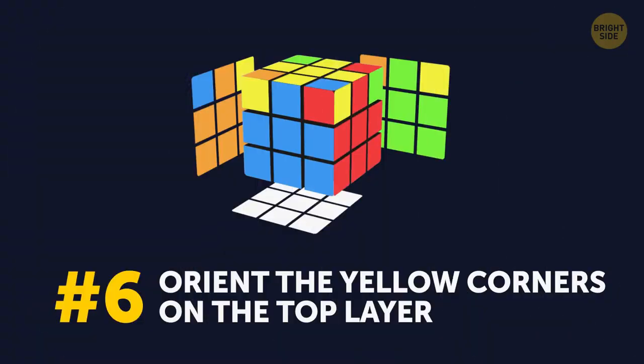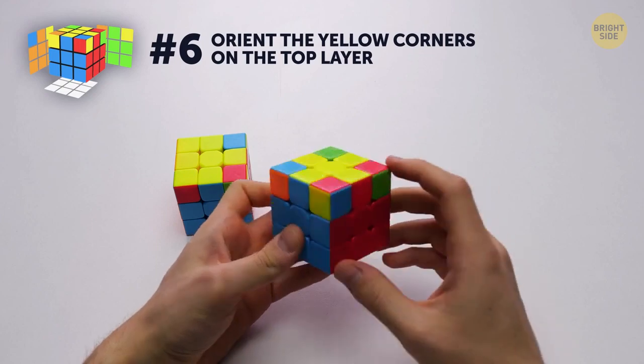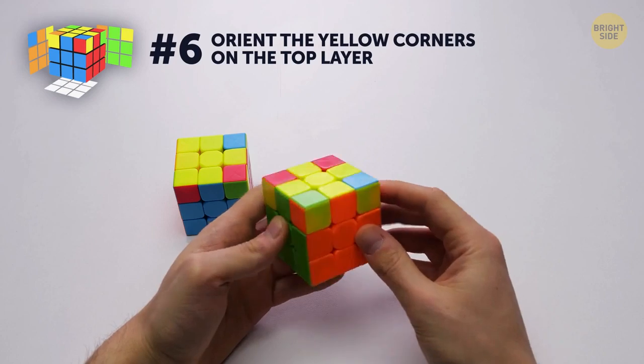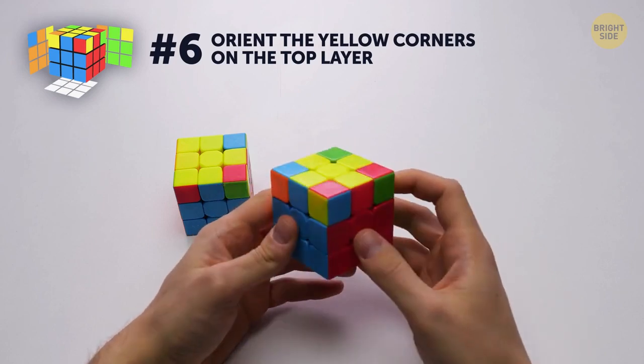Number 6. Orient the yellow corners on the top layer. At this stage, the task is to put the corners in place with the appropriate colors of neighboring centers. You only need to move them into place. You're not solving them just yet.